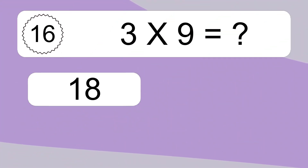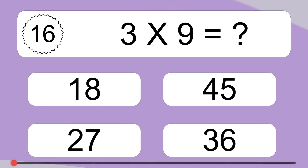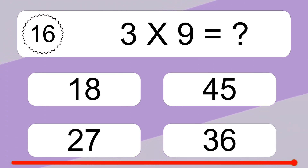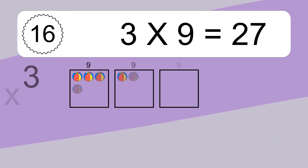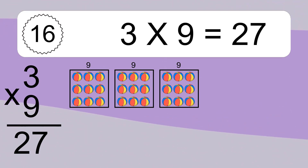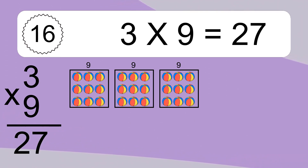3 times 9 equals what? 3 times 9 equals 27. We have 3 boxes, and each box has 9 colorful balls inside. If you count all the balls in all the boxes together, you will have 3 times 9 balls. This equals 27 balls.